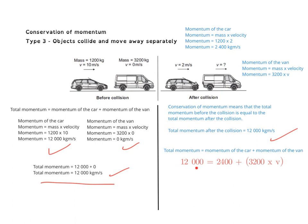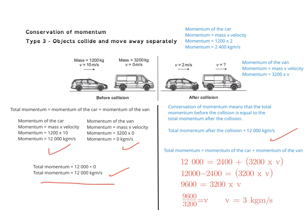Substituting in, we get: 12,000 equals 2,400 plus 3,200 times v. Subtracting 2,400 from both sides gives 9,600 equals 3,200 times v. Dividing both sides by 3,200, we get v equals 3 metres per second.